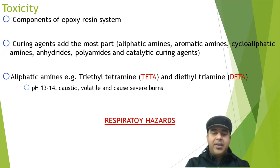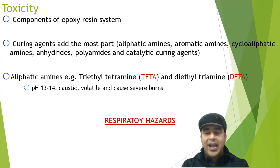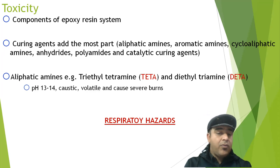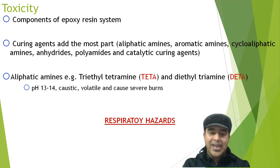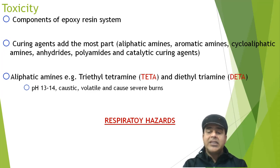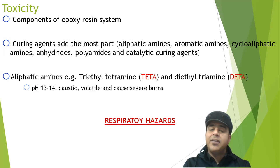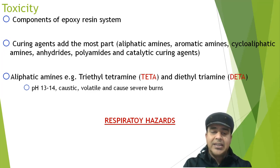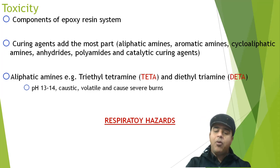Aliphatic amines — for example, triethyltetraamine and diethyltriamine — have a pH of 13 to 14. They are highly caustic in nature, they are volatile, and they cause severe burns. They are basically respiratory hazards for workers involved in the synthesis or people working with the epoxy resin.